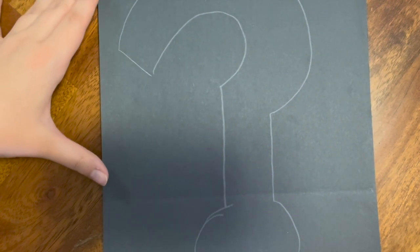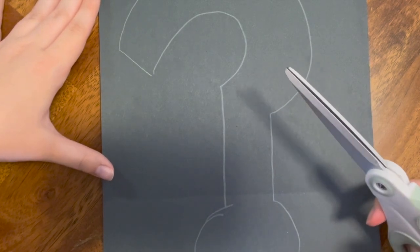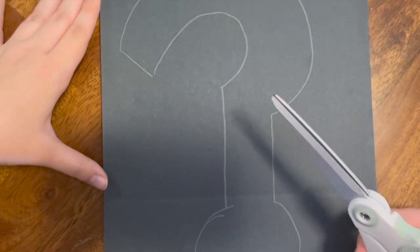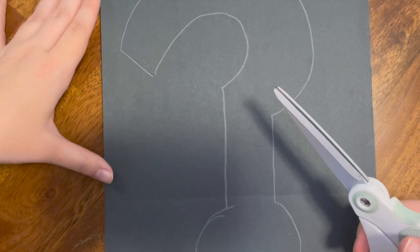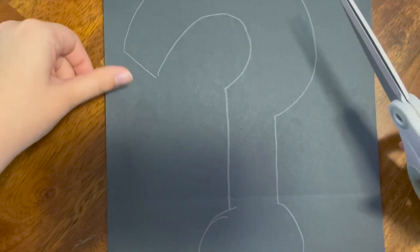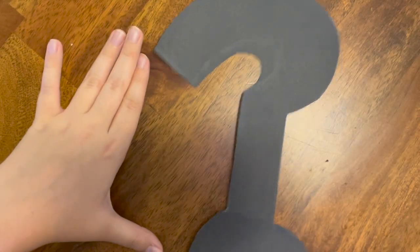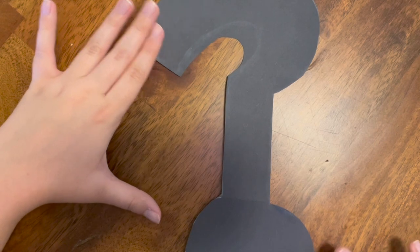Now you're going to take your scissors and cut your question mark out. Remember, hold the scissors away from your body and ask an adult for help. Carefully cut out along the lines that we already created. Go ahead and pause the video now to cut out your question mark. Once your question mark is cut out it should look a little something like this.